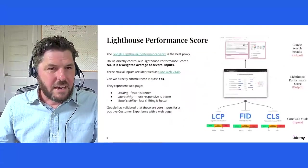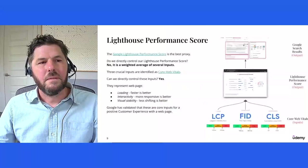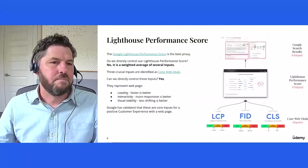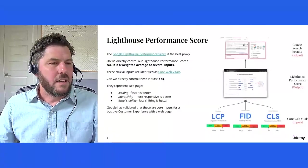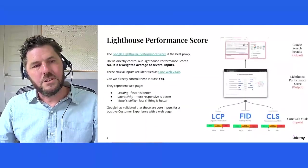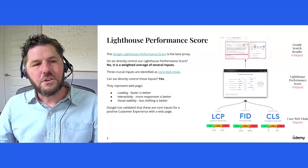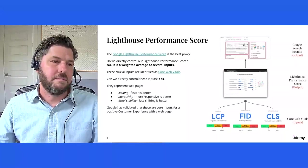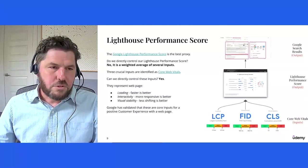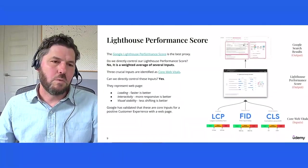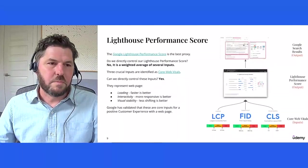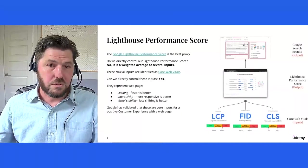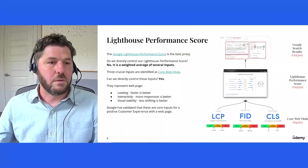So let's revise our goal and let's identify inputs that we do directly control. In the case of SEO performance on search engines, a great proxy to this is Google's Lighthouse performance score for a given web page. This is interesting though because here as well, do we directly control our Lighthouse performance score? Not directly. It's a weighted average metric based on several inputs that Google has defined.